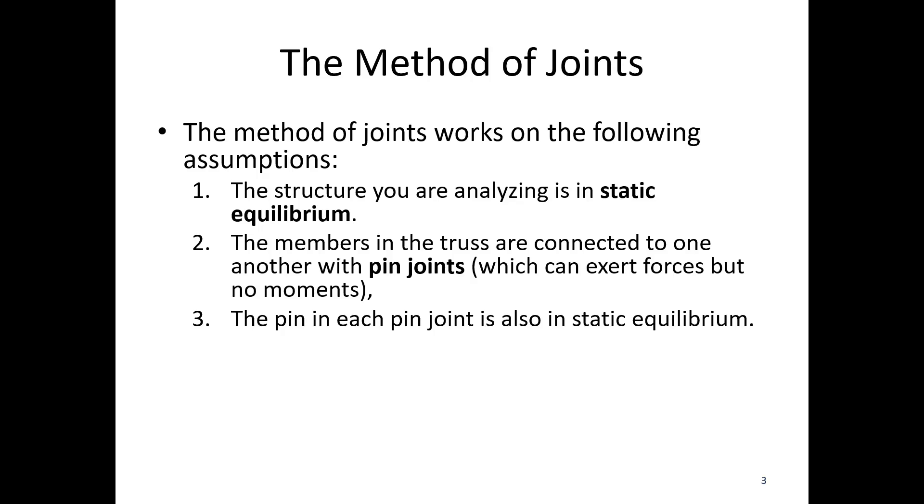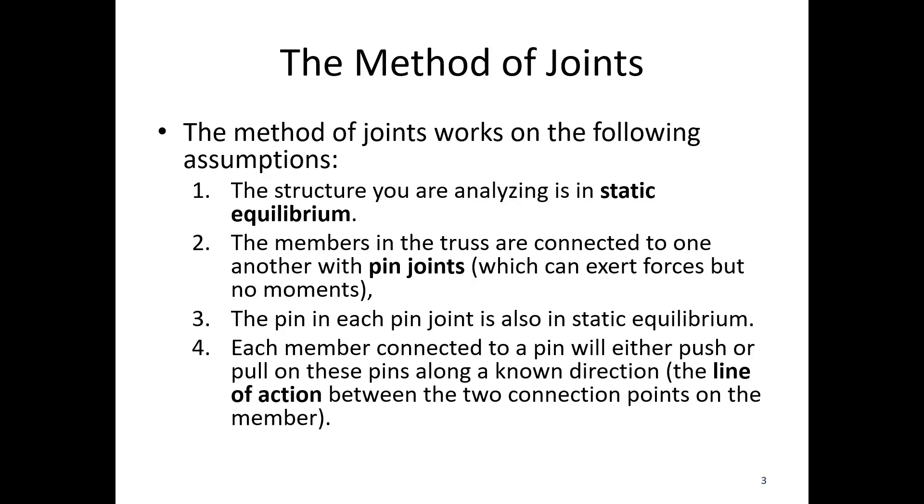So if we look at the joint or the pin in the middle of the joint for each piece, each one of those needs to have the sum of the forces equal to zero. And finally, each member connected to the pin, we either push or pull along these pins in a known direction. The line of action of the force is going to be the line between the two connection points in the member.